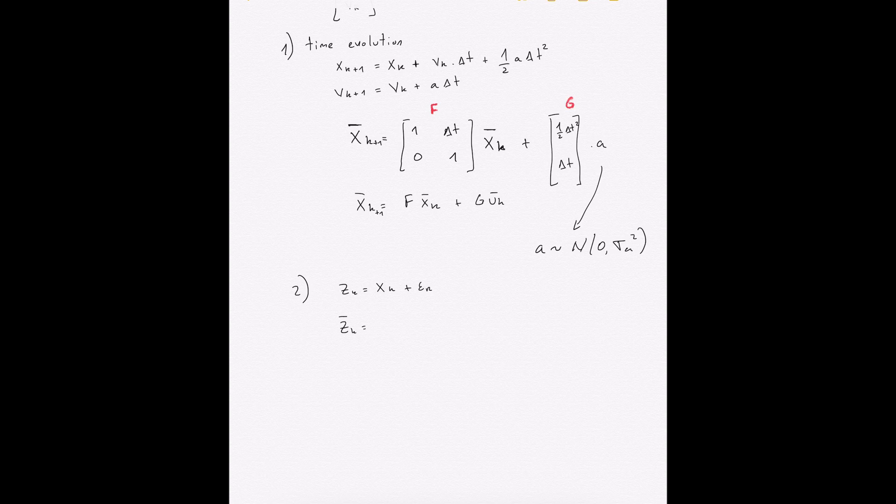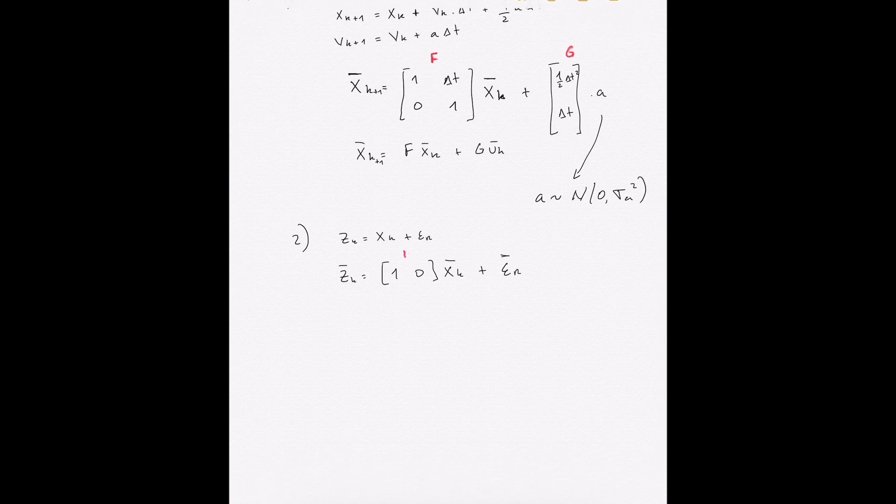For that we need to define the second part which is that z_k equals x_k plus epsilon r and in vector form we're going to write it in this way. So z_k equals one zero x_k plus and here we have our noise. And this matrix one zero is called H as far as I recall.